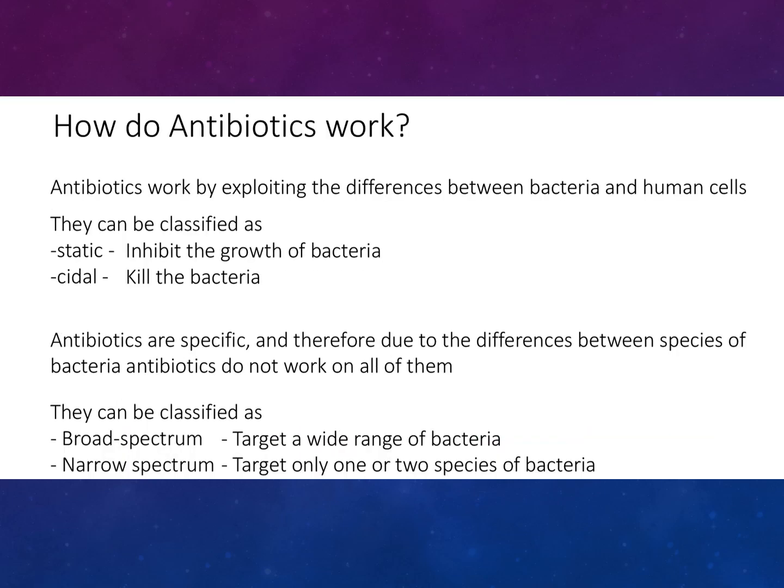So how do antibiotics work? They basically work by exploiting the difference between bacteria and human cells. They can be classified as static or cyto — static means they inhibit the growth of bacteria, cyto means they kill the bacteria. Antibiotics are specific, and therefore due to differences between species of bacteria, antibiotics do not work on all of them. They can also be classified as broad spectrum, meaning they target a wide range of bacteria, or narrow spectrum, meaning they target only one or two species of bacteria.